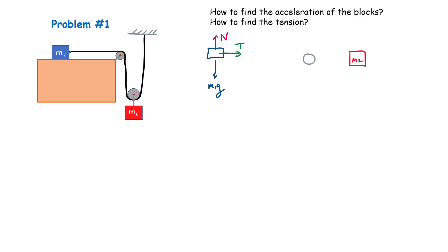I'm also going to do a free body diagram on this pulley, with a red dot at its center. For block M2, it's pretty straightforward — you have the weight M2G acting down, and it's connected to that pulley, so I'll call this tension T2. Those are the two forces acting on block M2. Now for the pulley — it's also connected from the center by that same string, so this is tension T2 acting on the pulley. The two strings looping around each carry a value T.